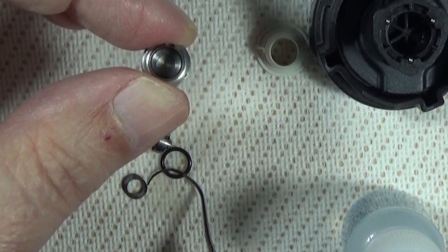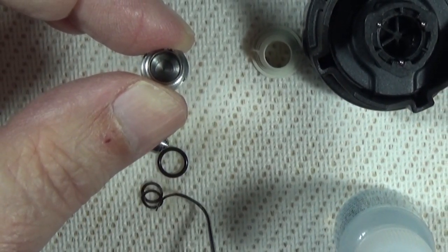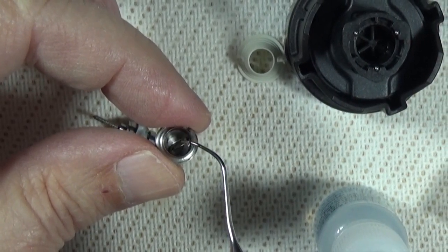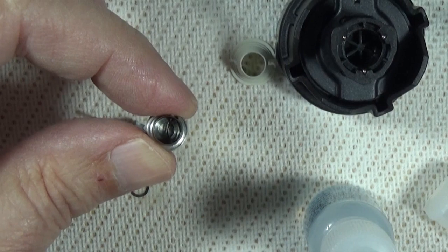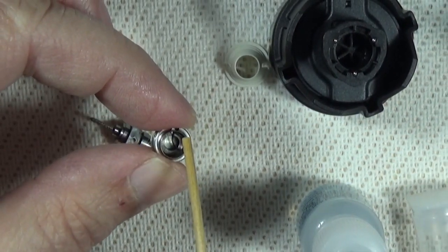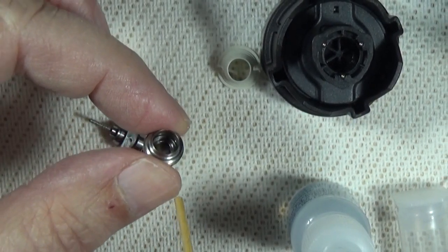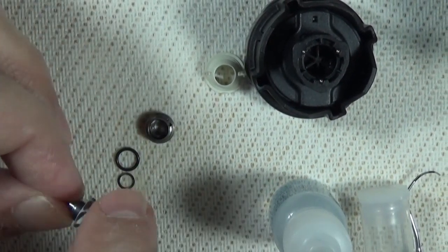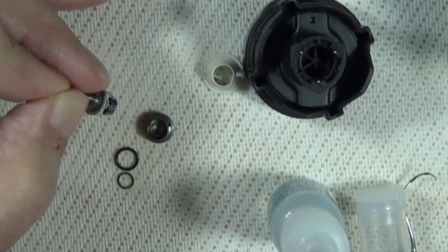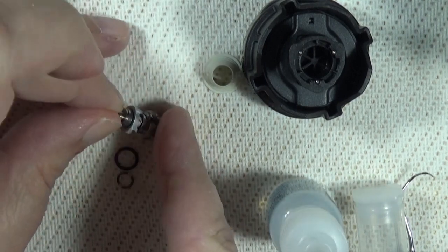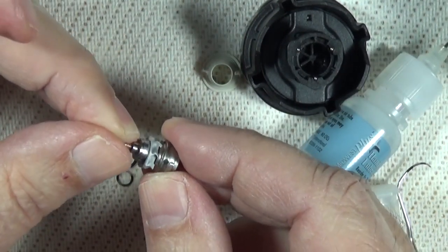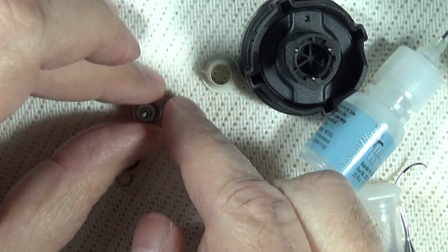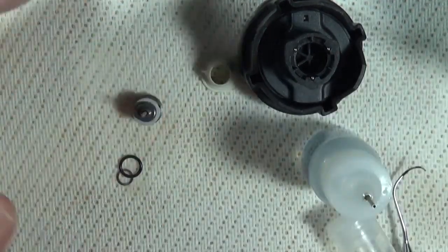So we've got that in. Now we can take our wave washer. That's just going to lay flat in the bottom. Then we're going to take our turbine itself and it will seat down in the back cap. It will slide in and out, so you kind of have to hold it together or it'll fall apart. We want to make sure that stays together so that the wave washer doesn't get tilted or out of position in there.